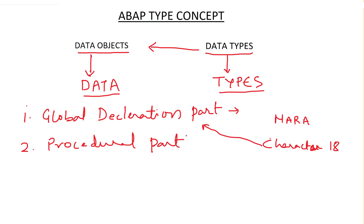The first thing is understanding what data you're planning to process and accordingly defining those memory locations. The data stored in the database is called persistent data — it's always there even if you shut down your SAP system and turn it back on. Whereas the data you store in your program is called transient data, and the life of this data is only while the program is running. Once program execution ends, all that data disappears.